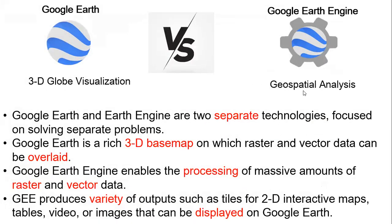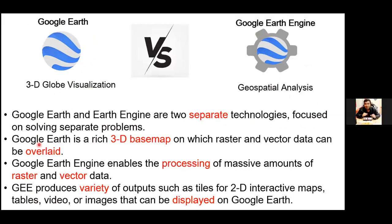First, let me clarify the basic difference between Google Earth and Google Earth Engine. Most participants might be confused if they are not familiar with Google Earth Engine. Google Earth is nothing but a 3D globe visualization software — with Google Earth you can only visualize data. Google Earth Engine is a totally separate platform generally used for geospatial analysis. Google Earth and Earth Engine are two separate technologies focused on solving separate problems. Google Earth is a rich 3D base map on which raster and vector data can be overlaid, such as KML shapefiles.